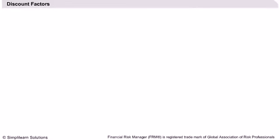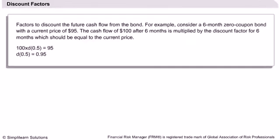Discount factors are used to find the present value of a future cash flow. We have already seen that the worth of a sum of money in the future is less than that at the present, from the time value of money concept. We therefore apply a discount factor to the cash flow in each period in the future to arrive at the total present value.